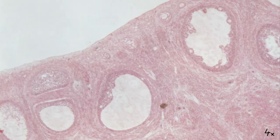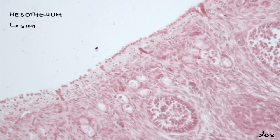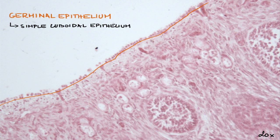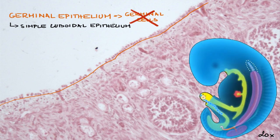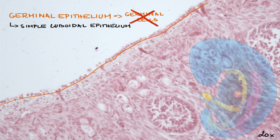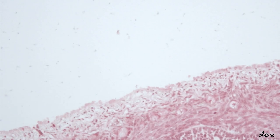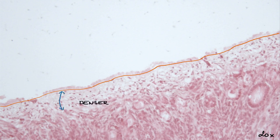The mesothelium is modified into a higher simple cuboidal epithelium called the germinal epithelium. The name 'germinal' comes from a time when people thought it gives rise to germinal cells, which we now know is not true. Primordial germ cells originate in the walls of the yolk sac and migrate to the gonadal primordia, where they induce formation of gonads — in this case, ovaries. There is a layer of denser connective tissue right under the germinal epithelium called the tunica albuginea.